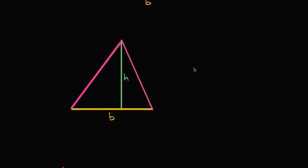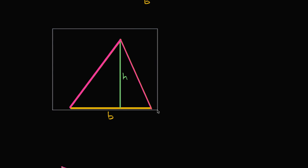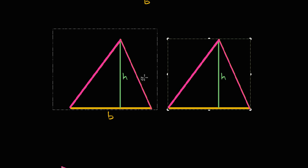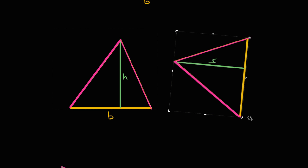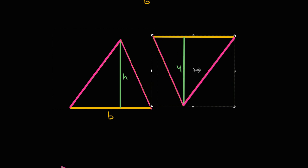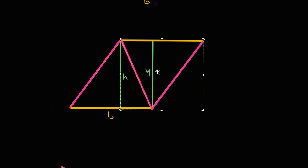So let's look at some triangles here. That is a triangle, and we're given the base and the height, and we're going to try to think about what the area of this triangle is going to be. You can imagine it's going to be dependent on base and height. To think about that, let me copy and paste this triangle. Now I have two of the triangles — so this is twice the area — and I'm going to rotate it around like that.